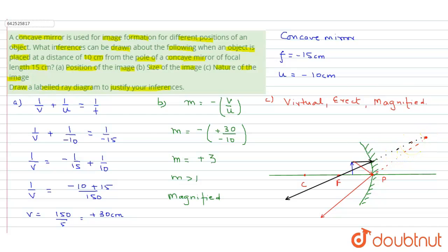The image formed will be behind the mirror. And if we can just draw that image, this will be the image of the object AB.